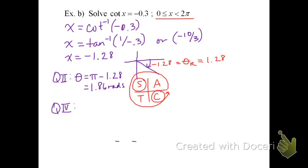In the fourth quadrant, working all the way around in the counterclockwise direction from the positive x-axis, the angle in quadrant 4 we would get by taking 2 pi and subtracting the reference angle of negative 1.28 from it. And that's going to give us an angle measure of 5 radians.